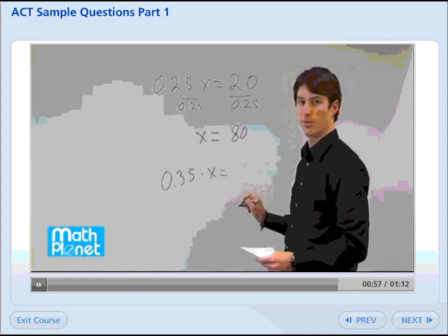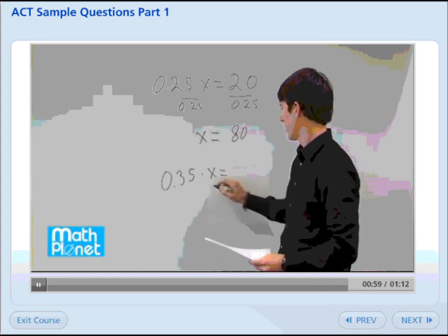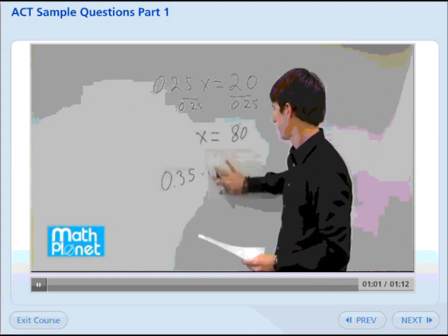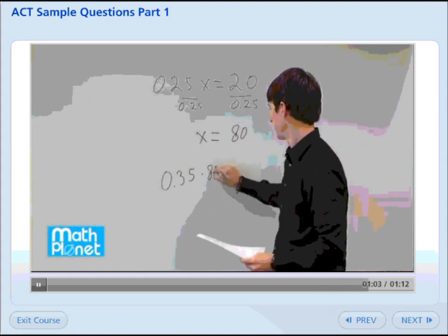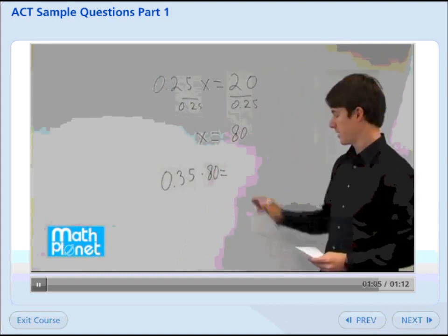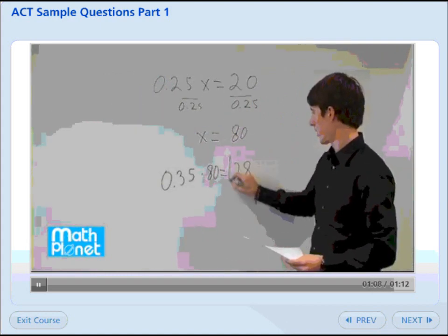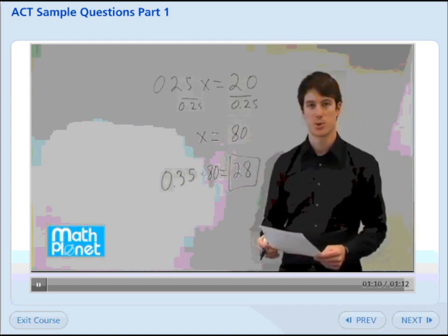So we can plug in 80 here and 0.35 times 80 is 28. So our answer is E, 28.